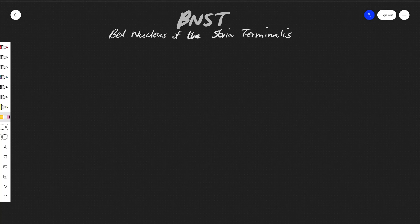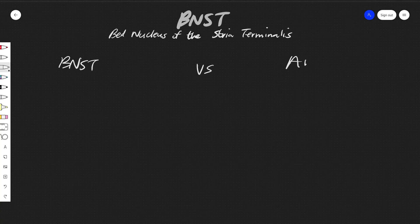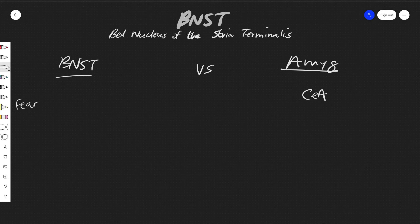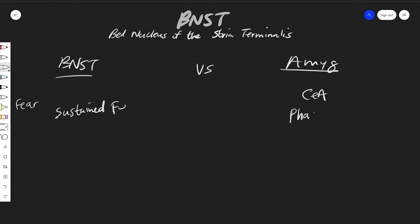Now let's compare the BNST to the amygdala, because they're so similar it's easy to get them confused. For fear processing: the central amygdala handles the output of the stress response, and what we see is that the amygdala is associated with phasic fear, while the BNST is associated with sustained fear.